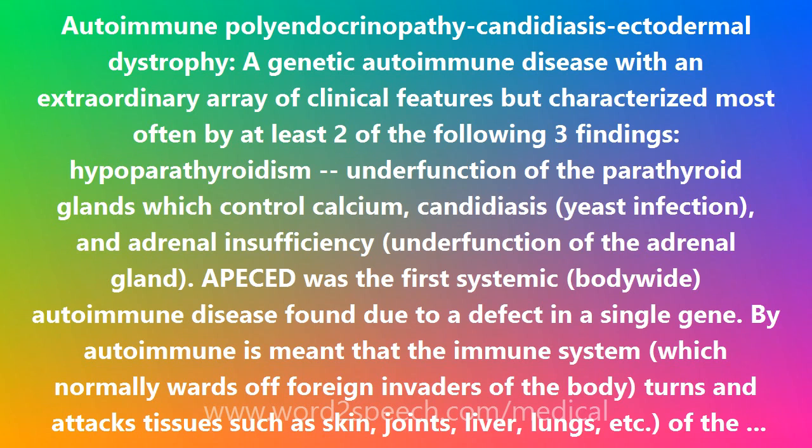Examples of common systemic autoimmune diseases include rheumatoid arthritis, systemic lupus erythematosus, diabetes mellitus, Sjogren syndrome, scleroderma, Goodpasture syndrome, vitiligo, Addison disease, thyroiditis, and many others.